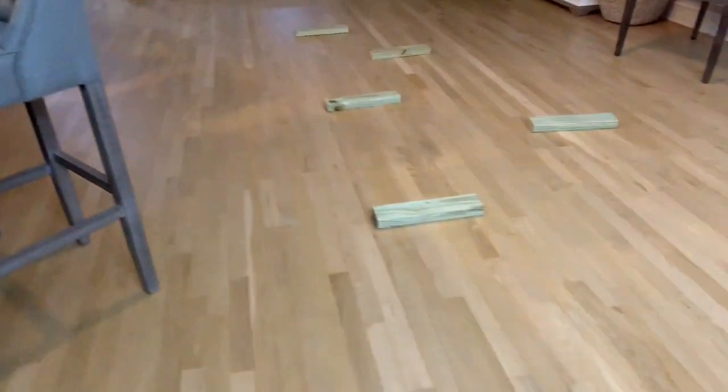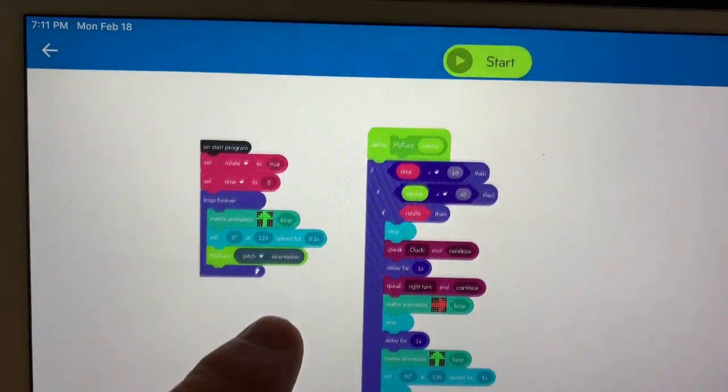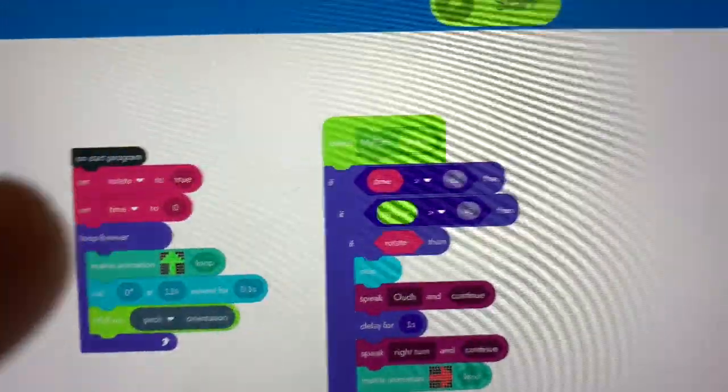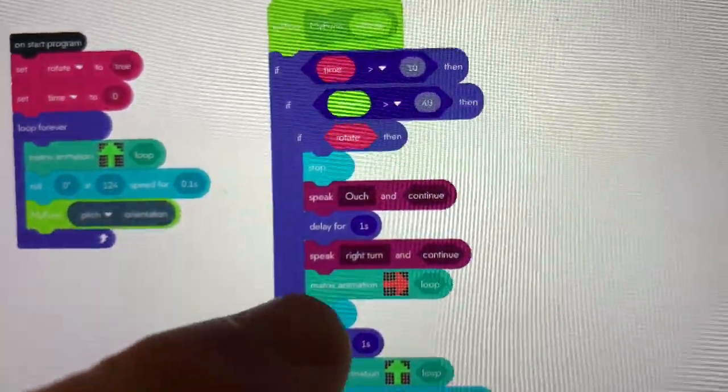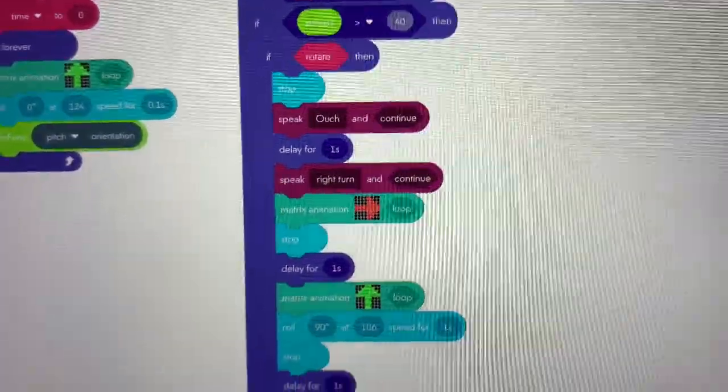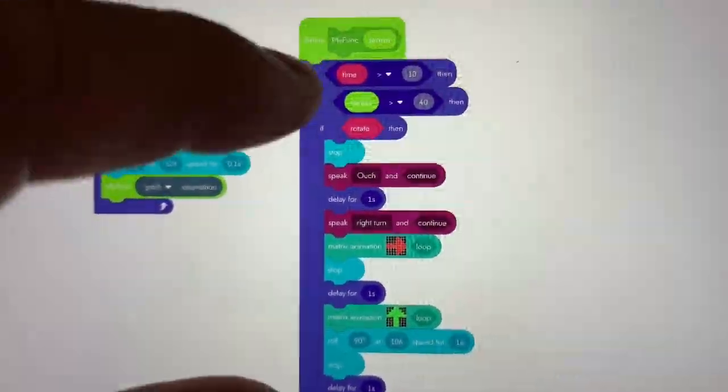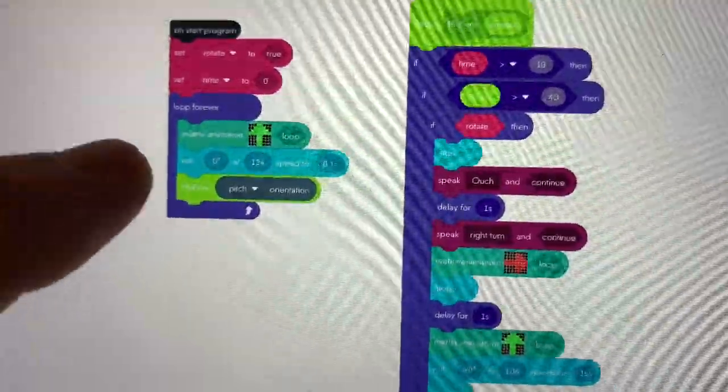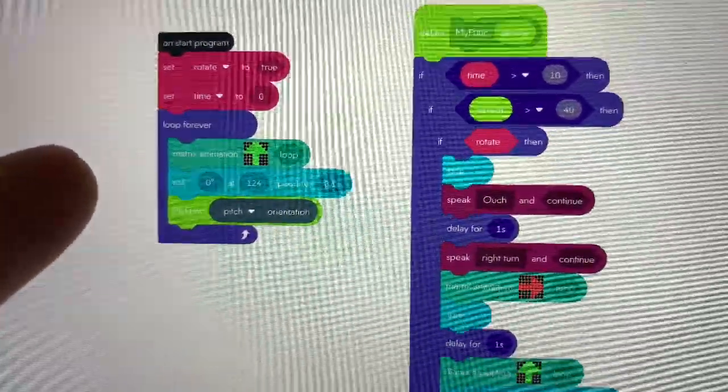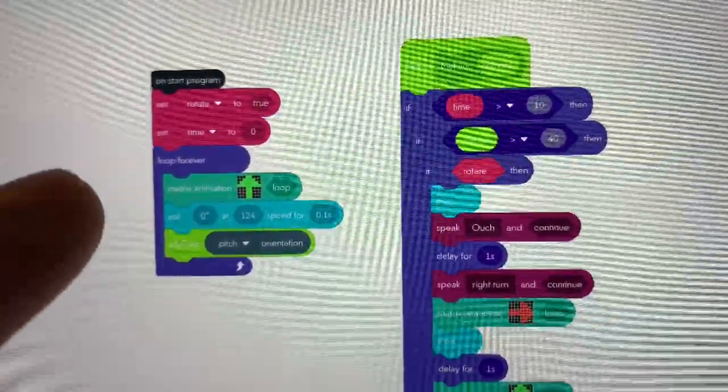We haven't changed the program other than adding some of the... We went in and added the... Let's see, what did I do? I added the speak and the matrix animation for the arrows, but I haven't really... All of that, though, happens after it detects that it's running into something. It's actually this block of code over here that is not consistently running across the floor.